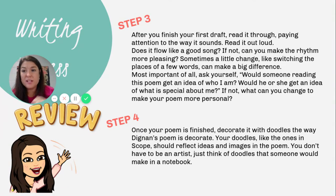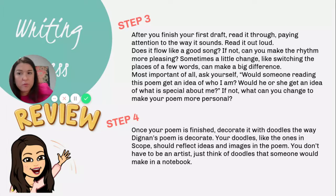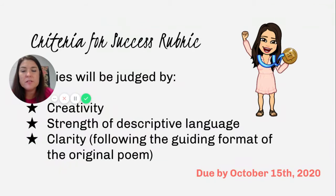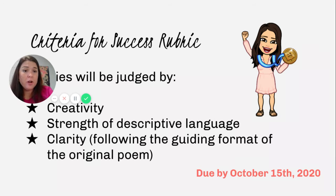Once your poem is finished, you want to decorate it with doodles. Look at the example in the link I'm going to give you to the magazine where the original poet and artist illustrated it. You don't have to be a huge, wonderful artist winning art awards — it can just have a doodle look to it. Here's the criteria for success, which is your rubric: you've got to be creative, have strong descriptive language, and it needs to have clarity. You've got to follow the guideline format — eight people's opinions of who you are plus your own opinion — following the format that Jennifer Dignan created. It's due by October 15th.